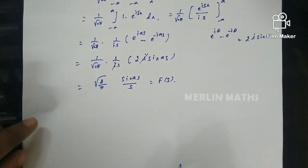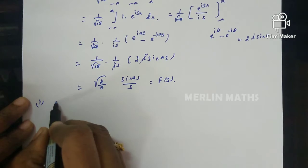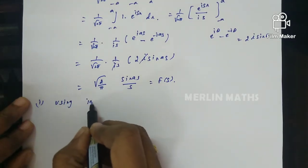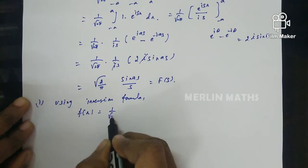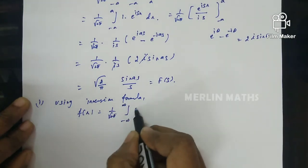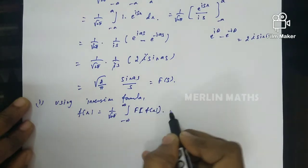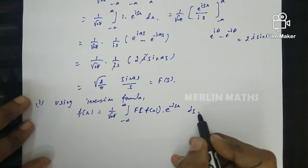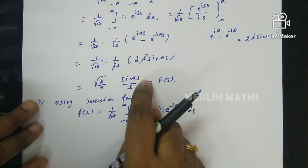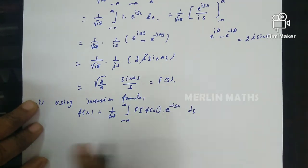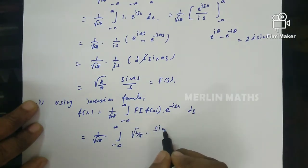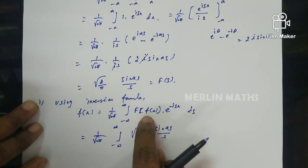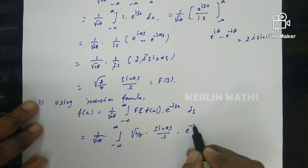To prove the deduction, we use the inversion formula. The inversion formula states: f(x) = (1/√(2π)) ∫₋∞^∞ F(s) e^(-isx) ds. Here F(s) is the answer we obtained in the first step. Substituting F(s) = √(2/π) · sin(as)/s, we get f(x) = (1/√(2π)) ∫₋∞^∞ √(2/π) · sin(as)/s · e^(-isx) ds.